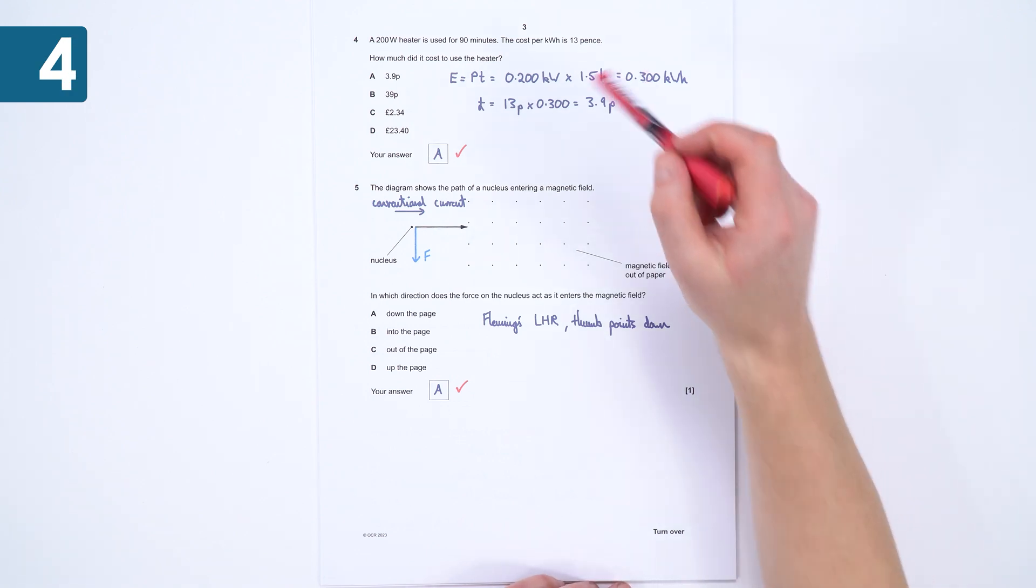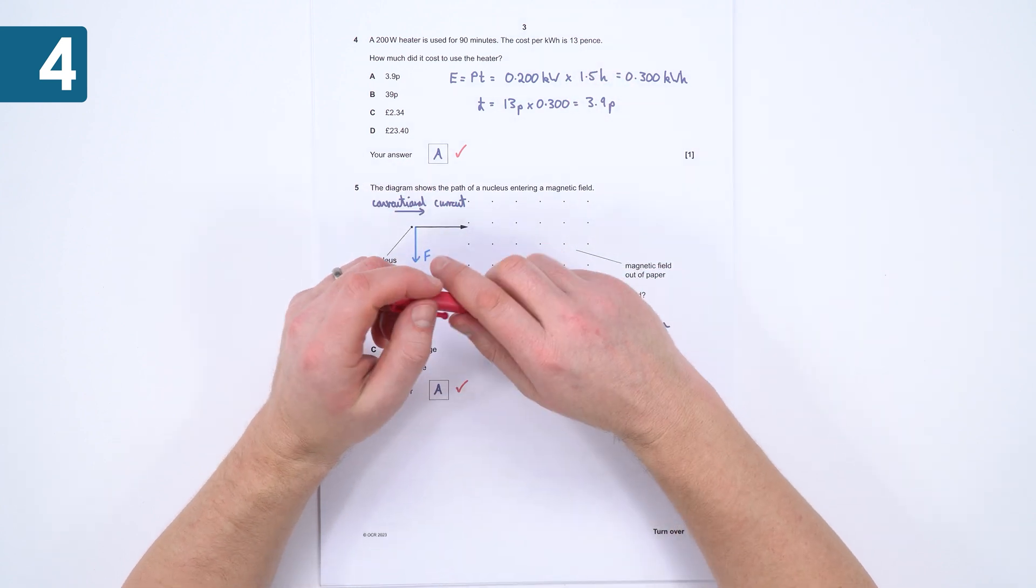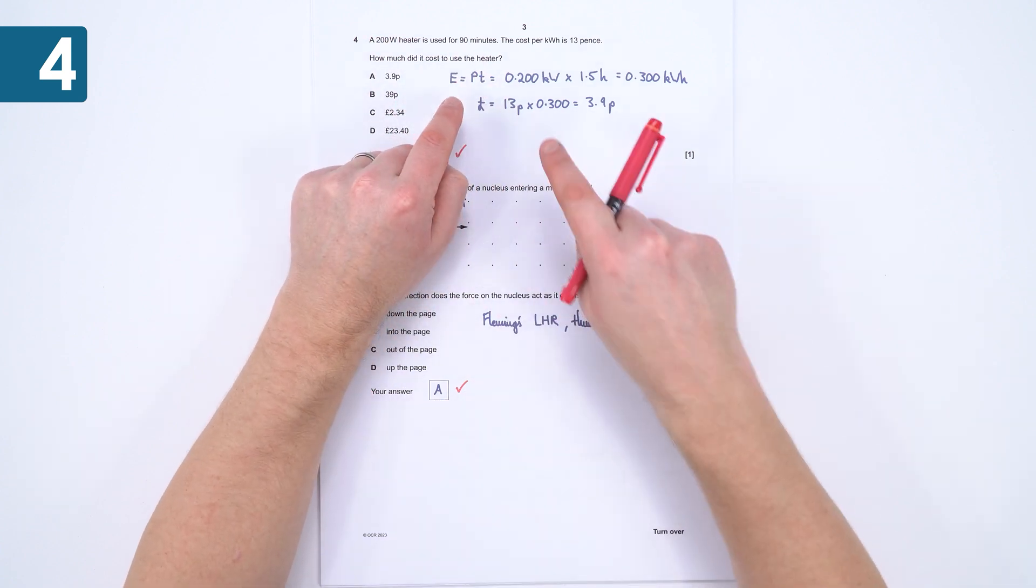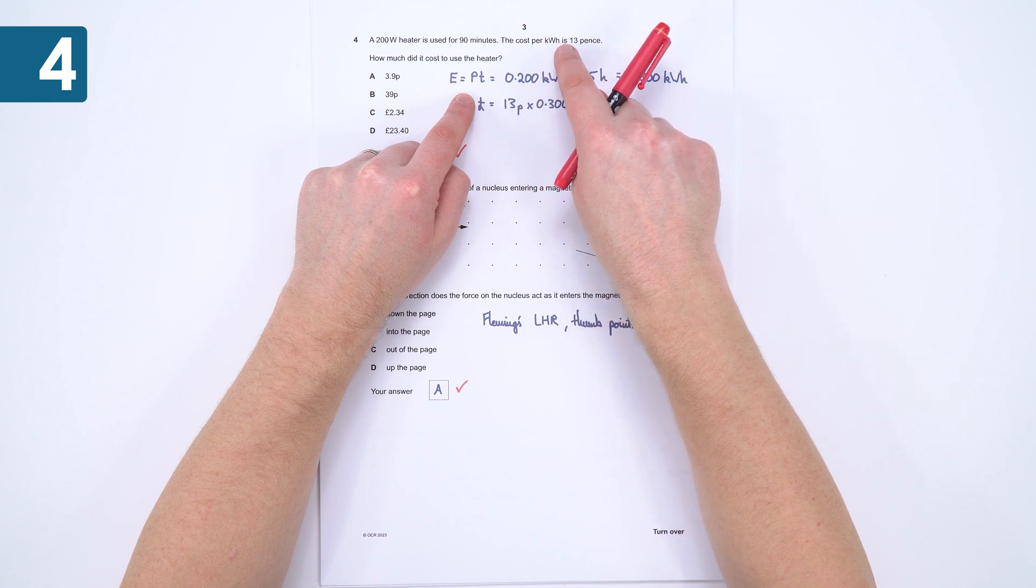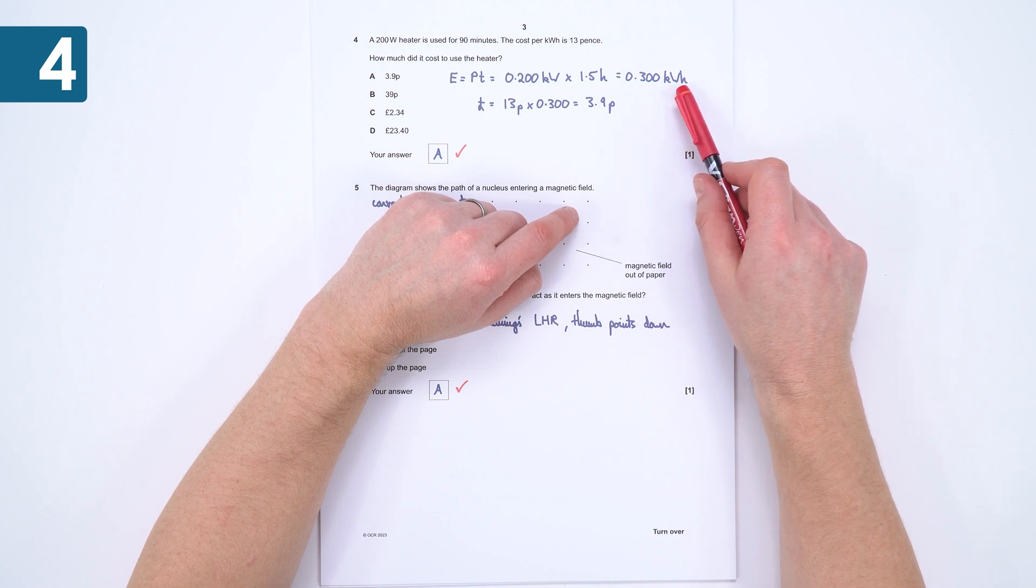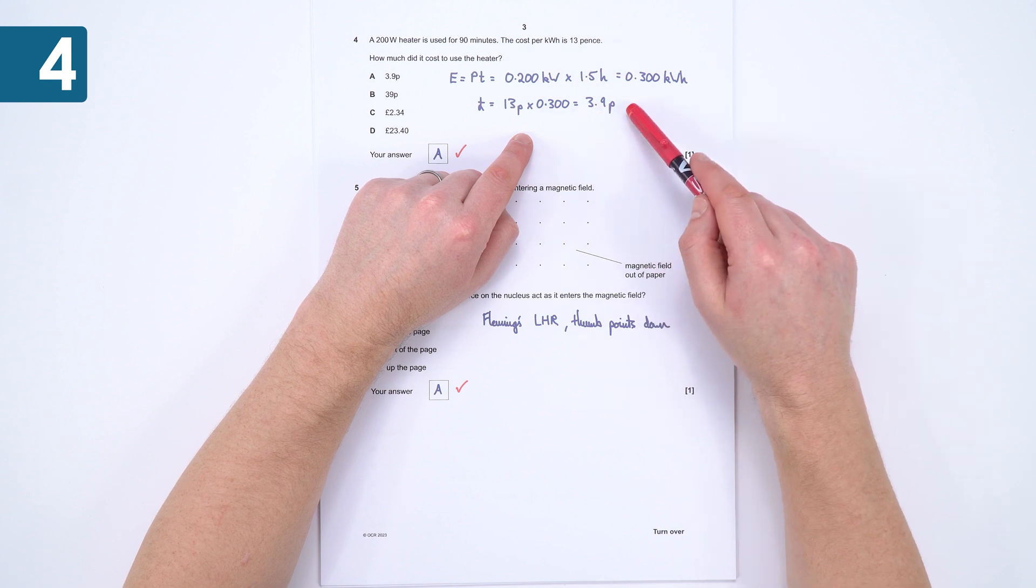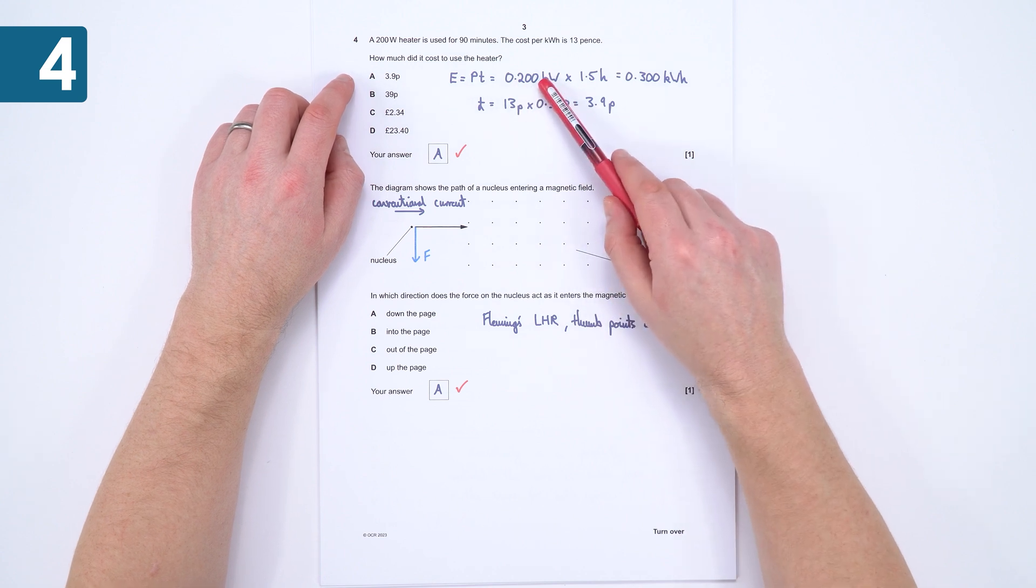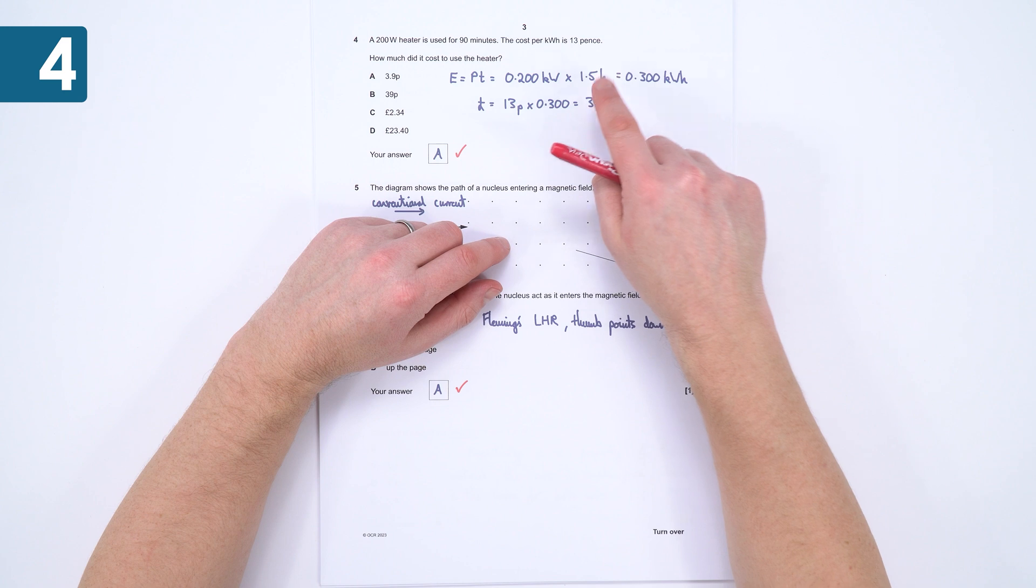This one here, I find that these questions where you've got something in kilowatt hours tend to be pretty straightforward most of the time. First of all, we just want to look at the total energy used, which is going to be the power times time. When I use this equation here, I put my power in kilowatts and I put the time in hours. So it's 0.2 times 1.5, which is 0.300 kilowatt hours, and if we know that it's 13 pence per kilowatt hour, we just multiply this number by 13 to get 3.9 pence, which is A. Be careful of your powers of 10, and write out the power in kilowatts and the time in hours.